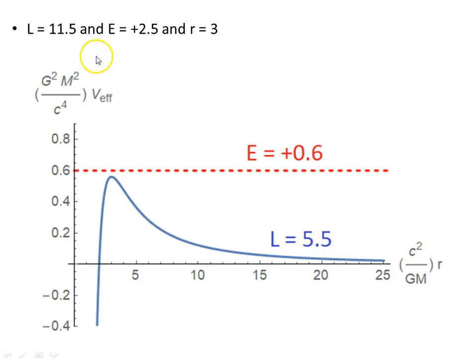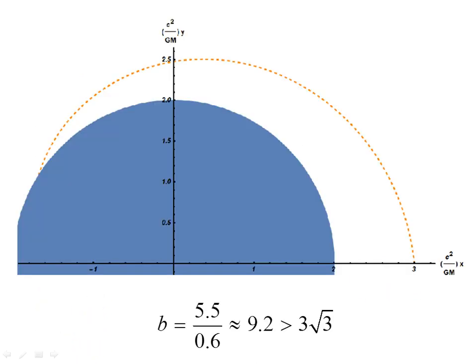Let's look at another example. L is 11.5, and E is plus 2.5, and this time, we're going to start at R equals 3, that's 1.5 times the Schwarzschild radius. Here are our units, here's the energy, angular momentum, potential function there. We start at 3, and we fall in, here we go, into 2, and continue on in. b is 5.5 over 0.6, approximately 9.2 is greater than 3√3, condition satisfied, it's a fall back in orbit, or a fall in orbit.